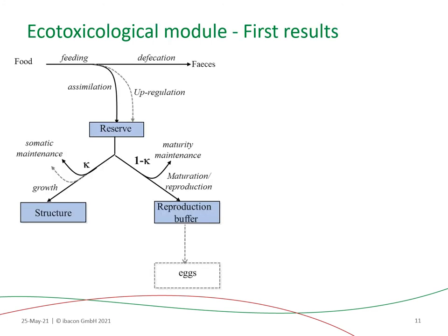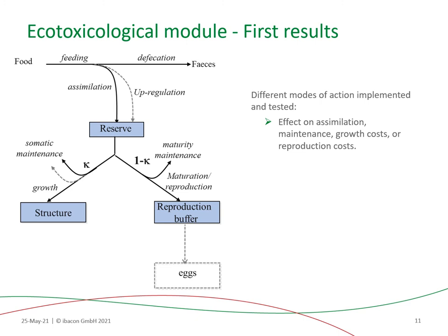The effect then increases linearly with an intensity controlled by the tolerance concentration. The type of effect is induced by the type of DEB parameters impacted. The usual physiological modes of action were implemented: in particular, an effect on the assimilation of energy from food, an increase of the somatic and maturity maintenance, an increase of the cost to produce a new unit of structure, or an increase of the cost to produce an egg.